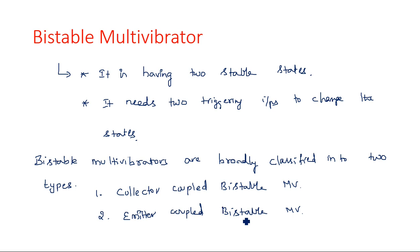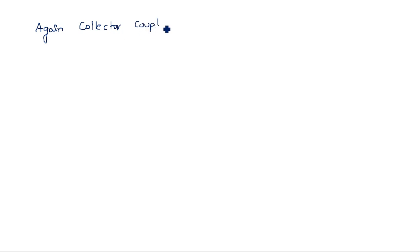The bistable multivibrator is also known as a binary, or simply a flip-flop. We may have studied flip-flop in STLE — switching theory and logic design. A flip-flop is a device used to store one bit of memory, either a zero or one. Internally, a flip-flop is made up of a transistorized model, which is nothing but a bistable multivibrator.